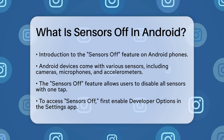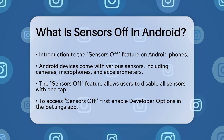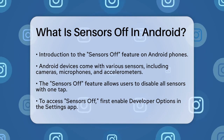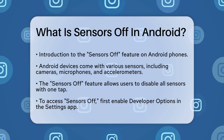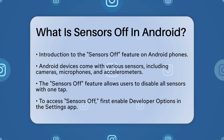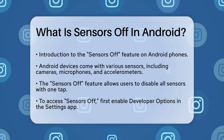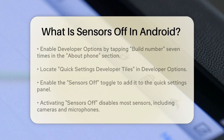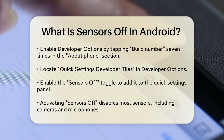The Sensors Off feature is a hidden setting in Android that allows you to disable all these sensors with just one tap. To access this feature, you first need to enable the developer options on your phone. This involves going into the Settings app, finding the About Phone section, and tapping on the Build Number option seven times. Once you've done this, you'll see the Developer Options menu appear in your settings.